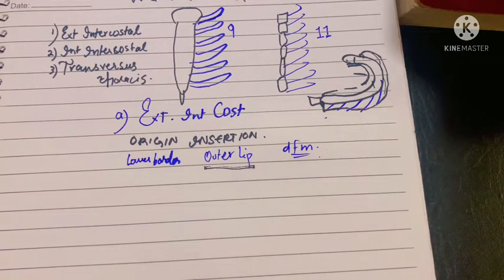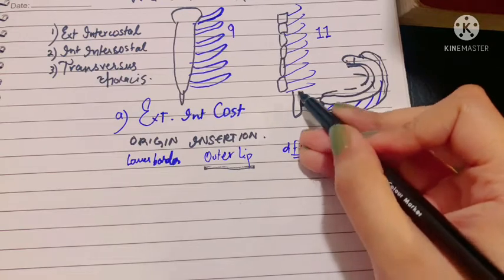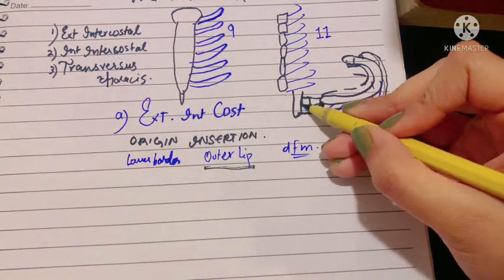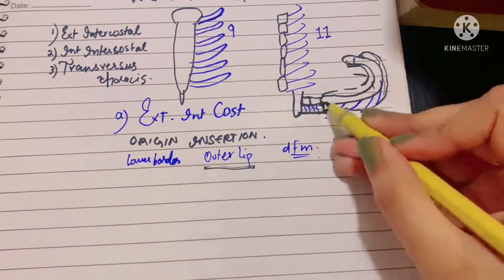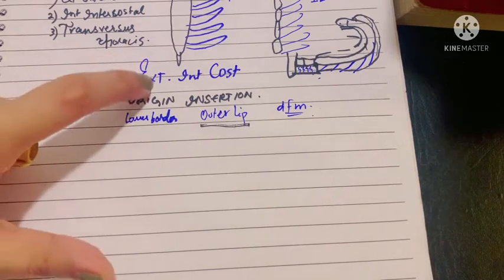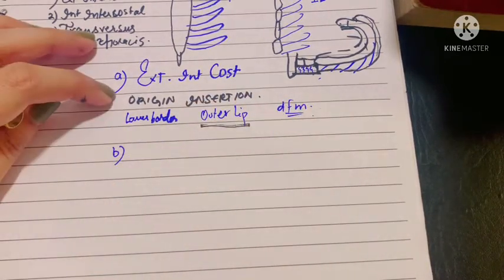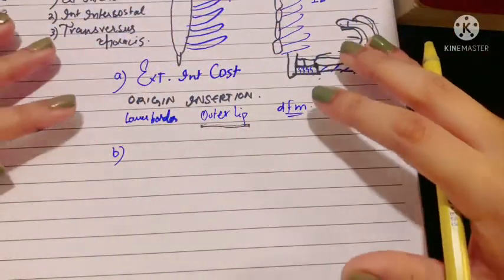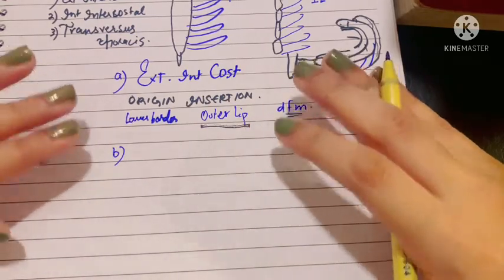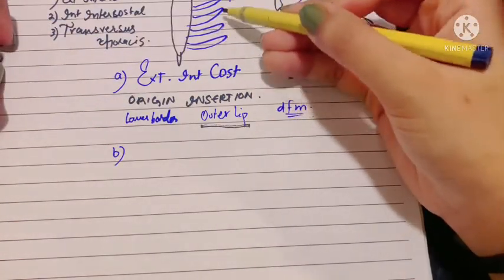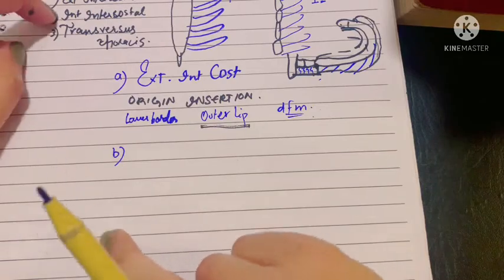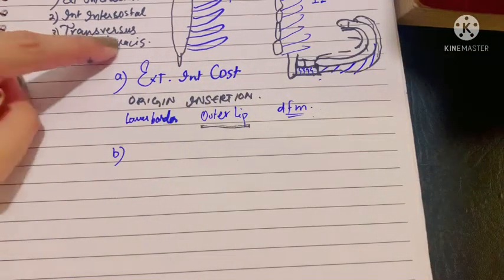When it reaches the costochondral junction, the muscle portion ends, and from the costochondral junction to the sternum it becomes the external intercostal membrane — also called the anterior intercostal membrane. Regarding dissection of the chest wall: first comes skin, superficial fascia, deep fascia, then the upper limb muscles such as pectoralis major, pectoralis minor, and serratus anterior. After that, the first muscle of the thoracic cage you'll see will be the external intercostal muscle. Deep to that comes the internal intercostal muscle, and even deeper comes the transversus thoracis.